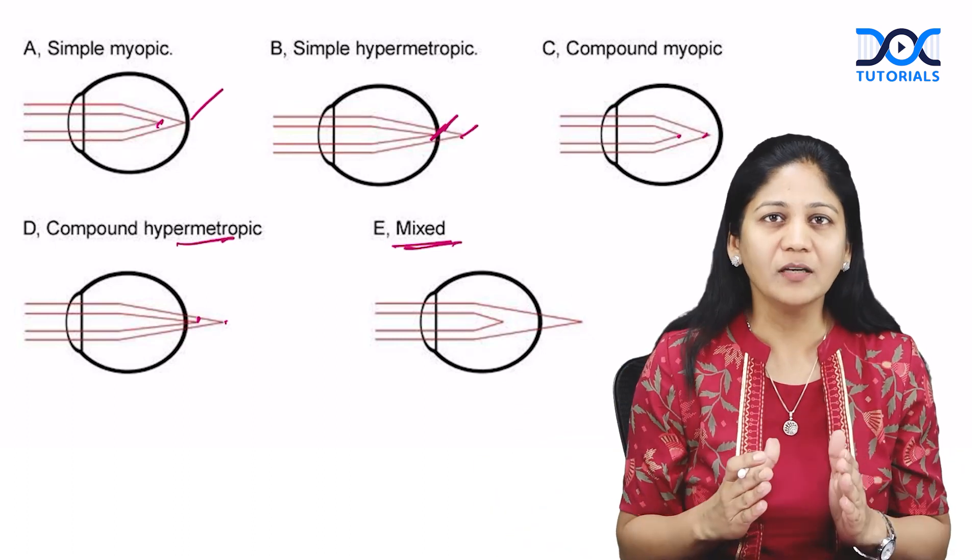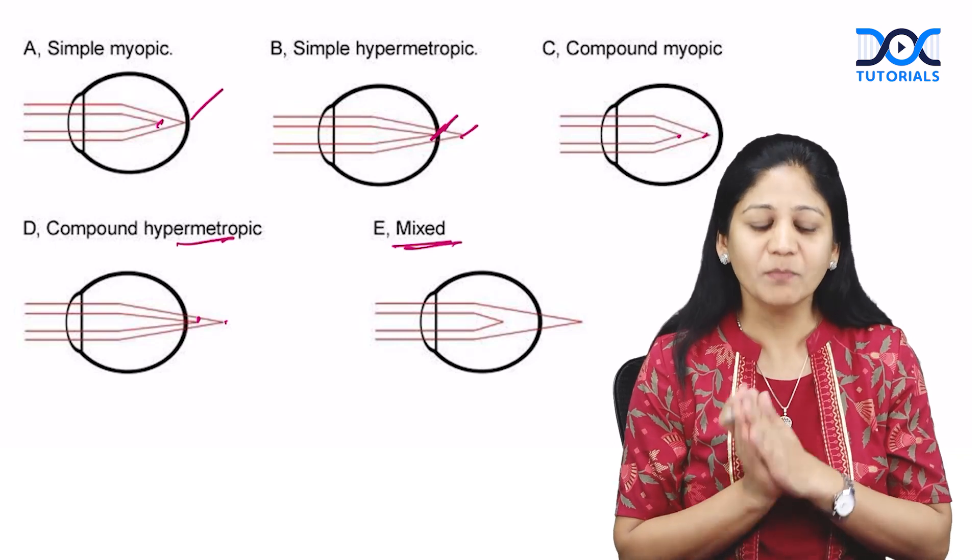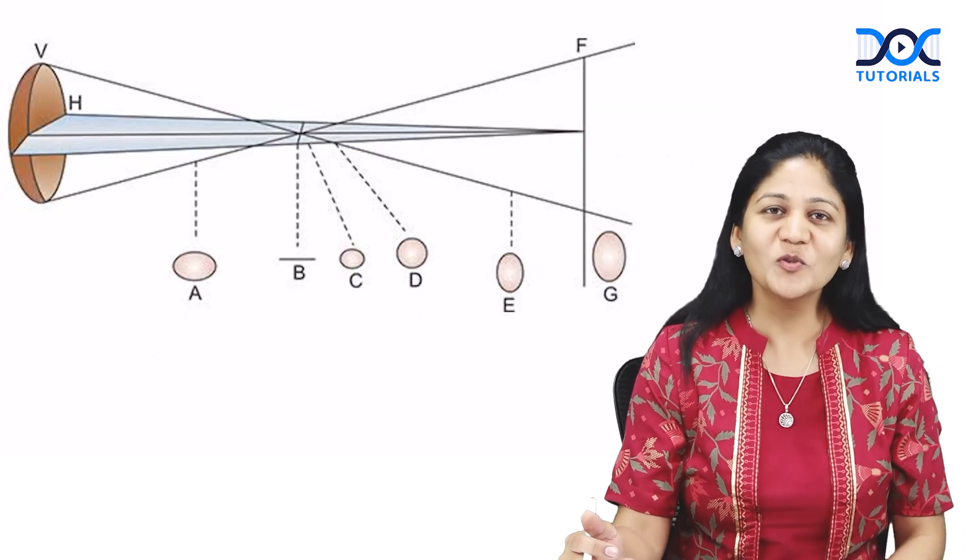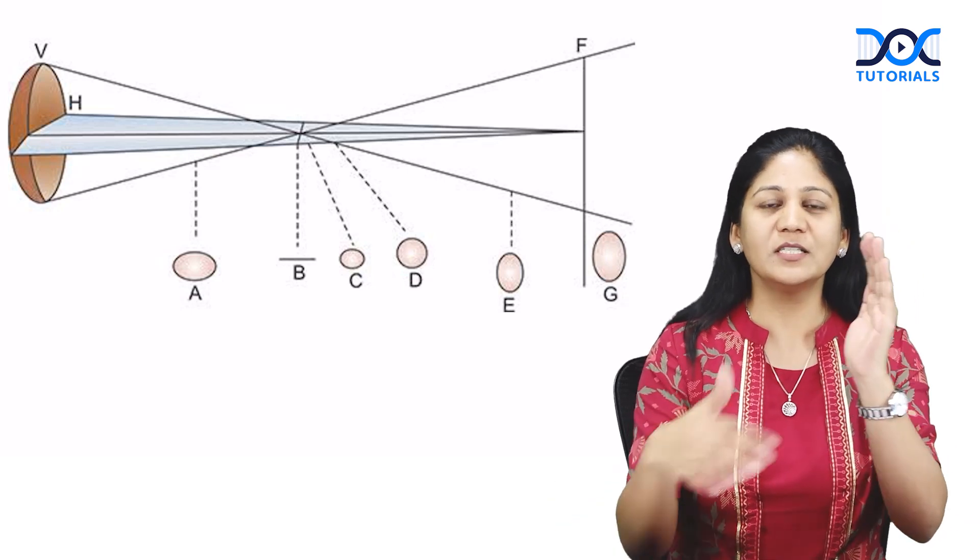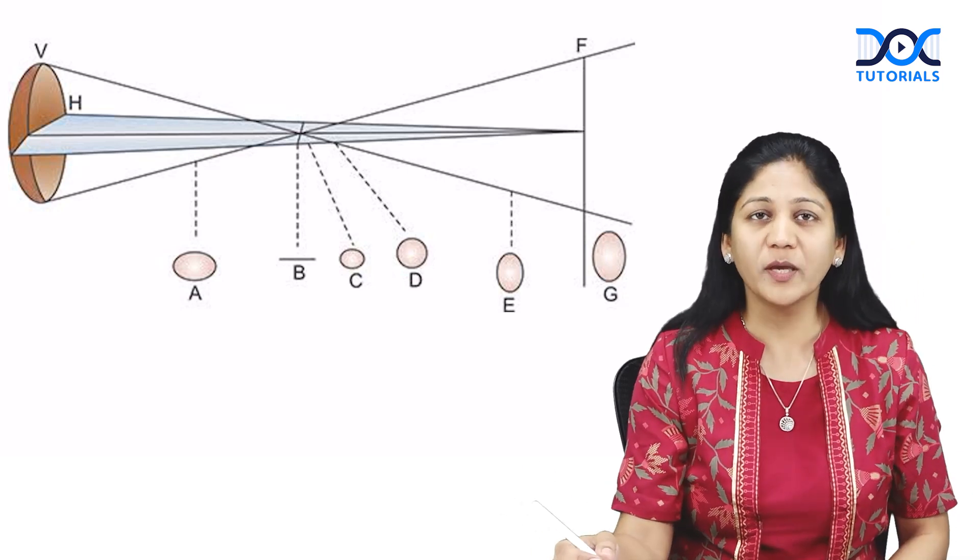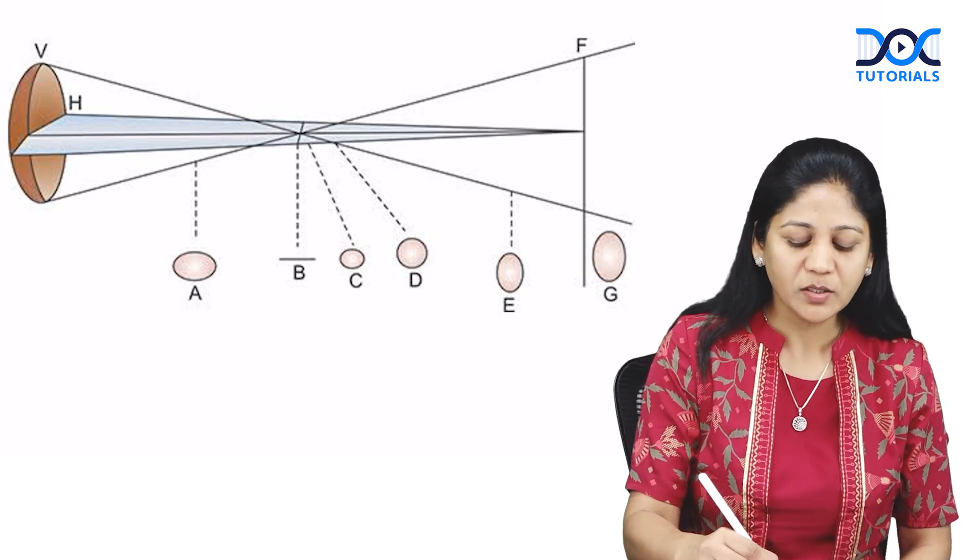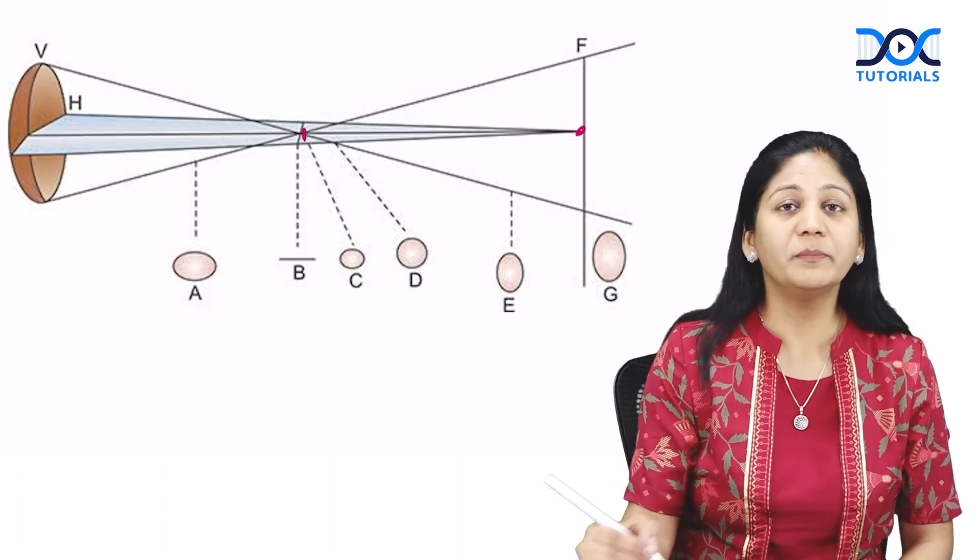These are important ray diagrams for astigmatism. Now, if this is Sturm's conoid with vertical and horizontal curvatures, different focal points exist for the vertical and horizontal meridians.